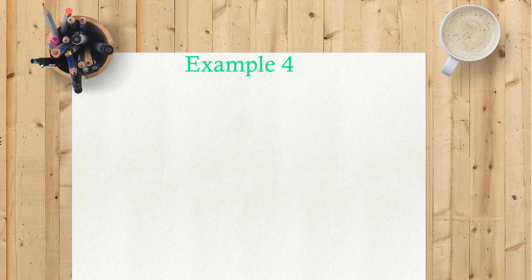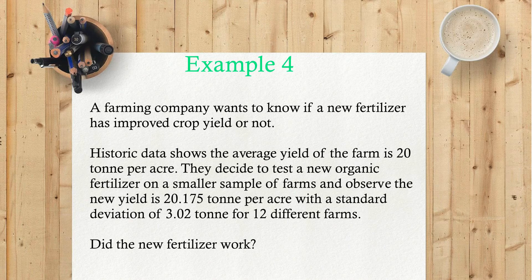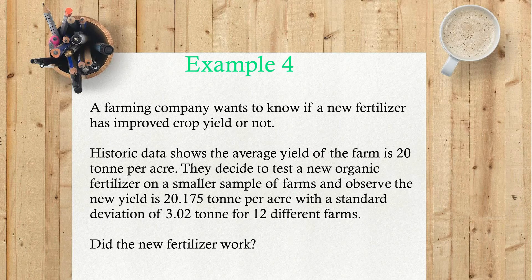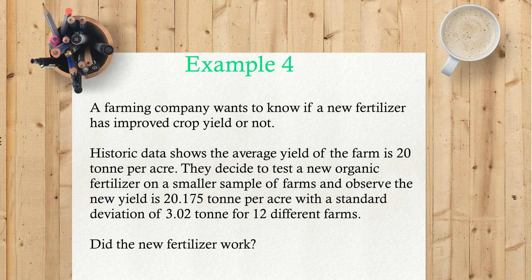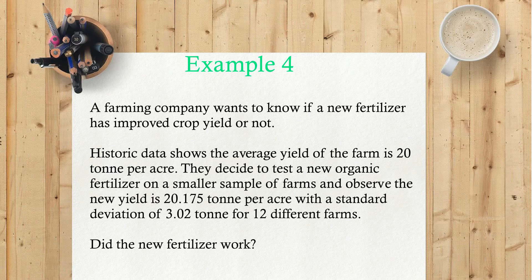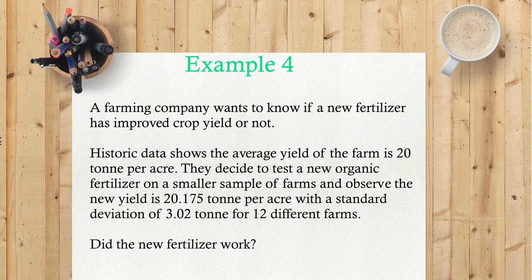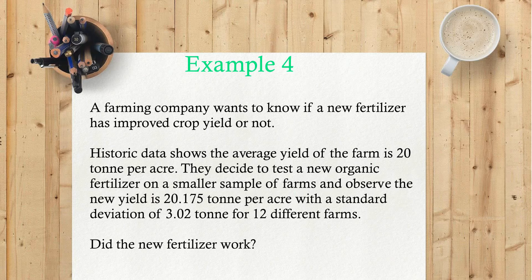Example 4: A farming company wants to know if a new fertilizer has improved crop yield or not. Historic data shows the average yield of the farm is 20 ton per acre. They decide to test a new organic fertilizer on a smaller sample of farms and observe the new yield as 20.175 ton per acre with a standard deviation of 3.02 ton for 12 different farms. Did the new fertilizer work?